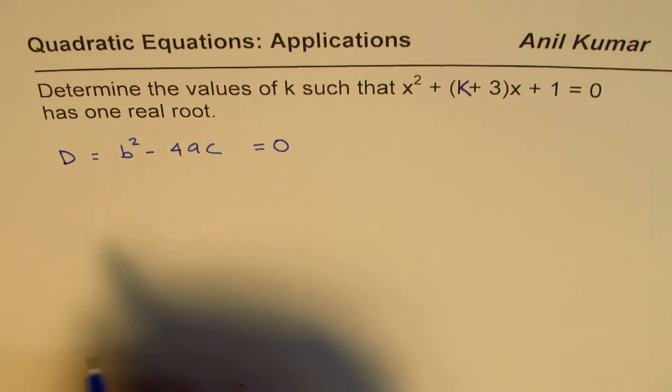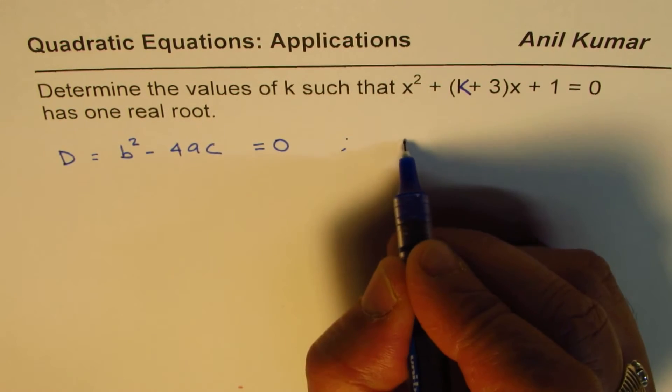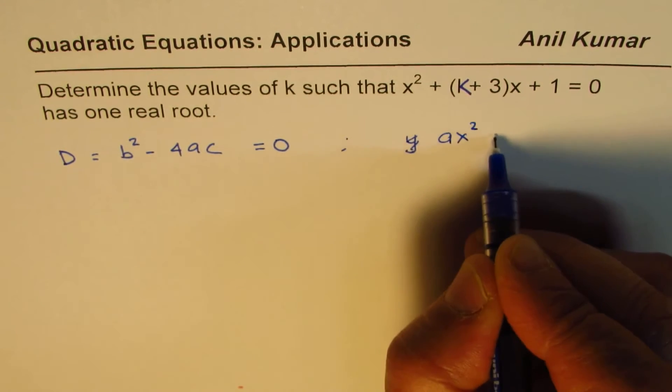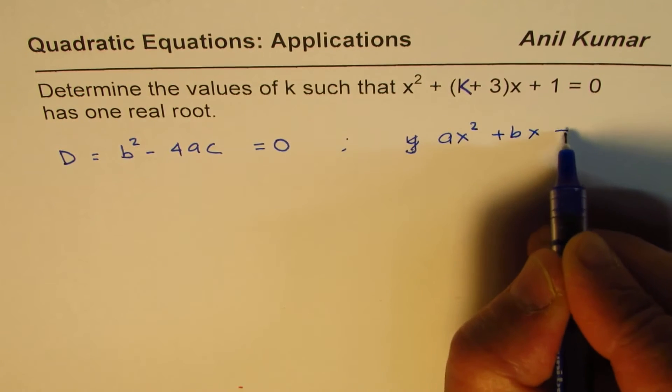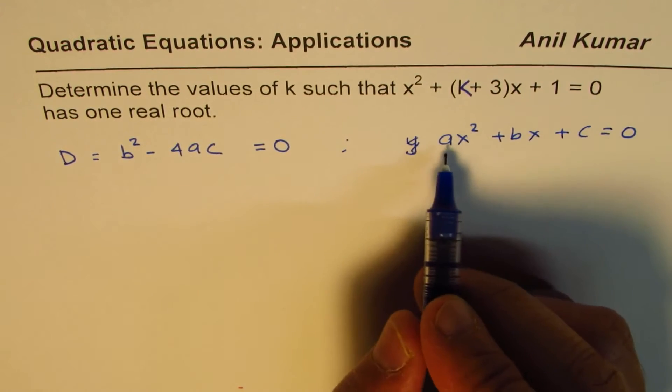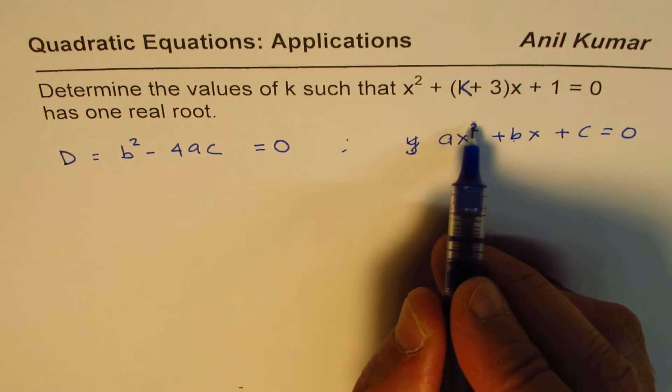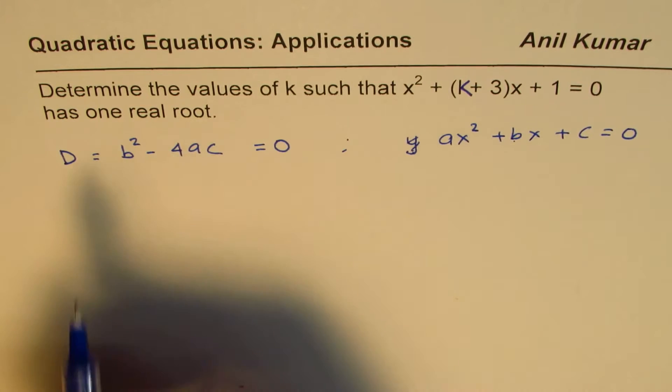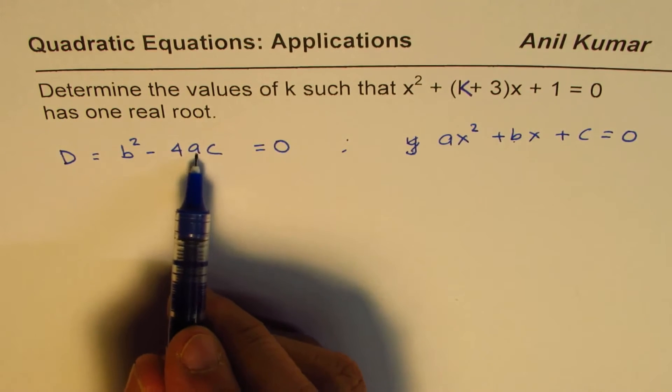So in general, let the quadratic equation be ax² + bx + c = 0. If I write this quadratic equation, a is the coefficient of x², b is the coefficient of x, c is the constant. Then b² - 4ac should be 0, only then there will be one real root.